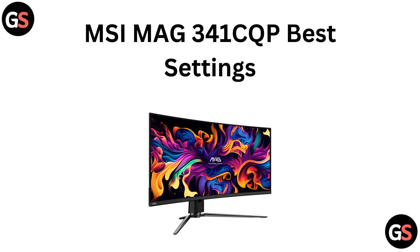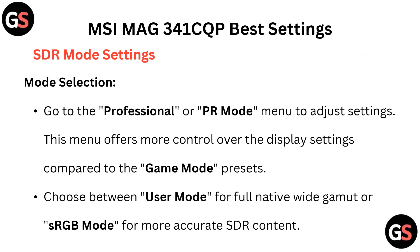Hello everyone, today in this video we are going to talk about MSI MAG 341 CQP Best Settings. For SDR Mode Settings, go to the Professional or PR Mode menu to adjust settings. This menu offers more control over display settings compared to the Game Mode Preset. Choose between User Mode for full 80 wide gamut or sRGB mode for more accurate SDR content.